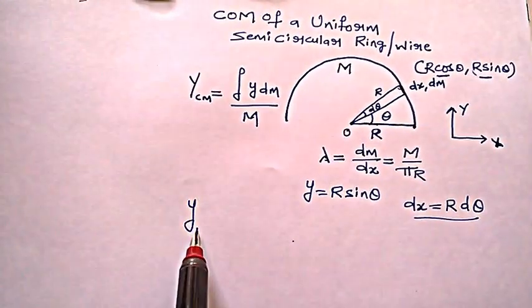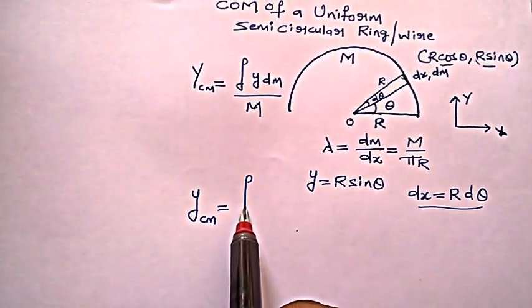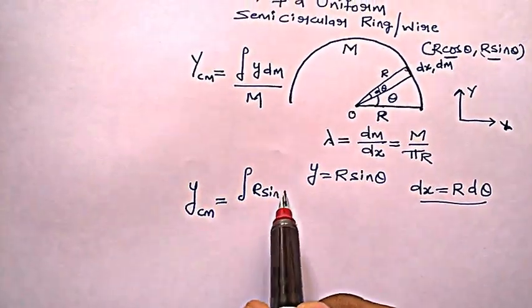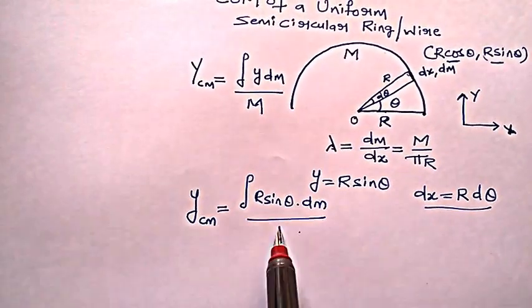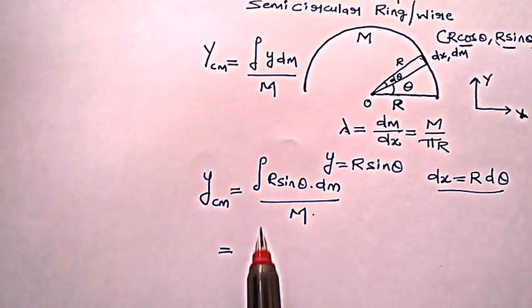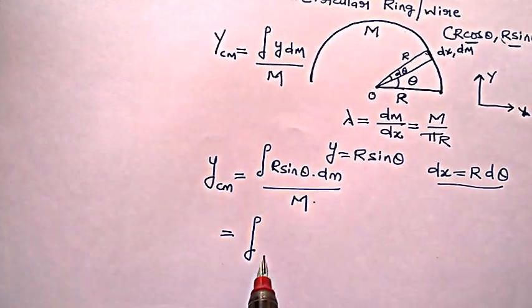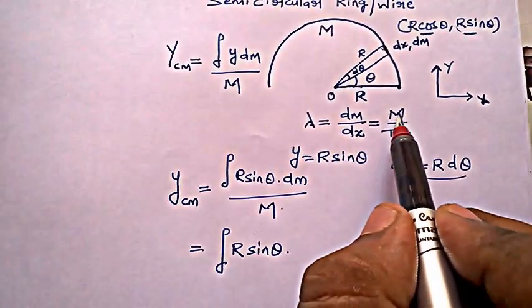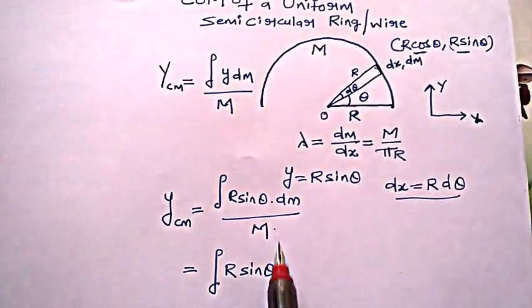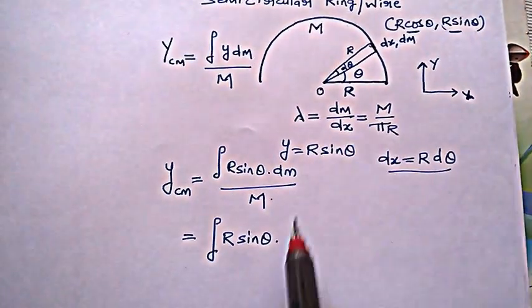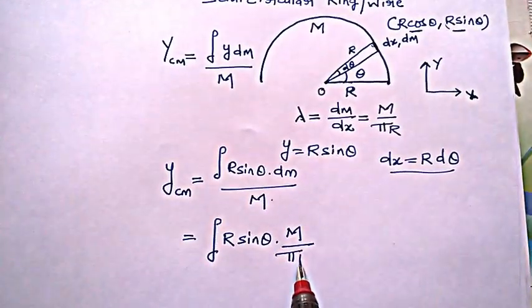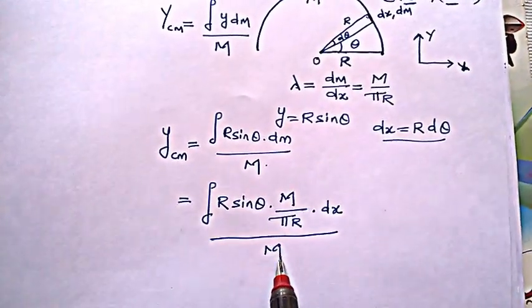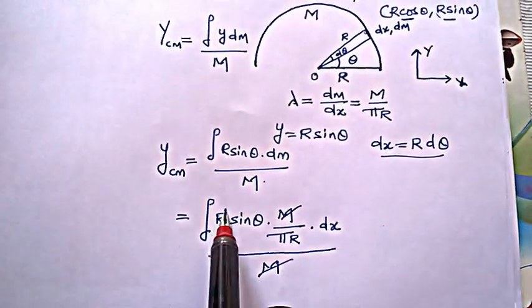So the center of mass y_cm is equal to integral y is r sin θ into dm divided by total mass. So let's go ahead: integral r sin θ, dm is M by πr into dx. So I can write dm as capital M by πr into dx, so I would write that πr into dx divided by the entire mass M, so M gets cancelled, also r gets cancelled.